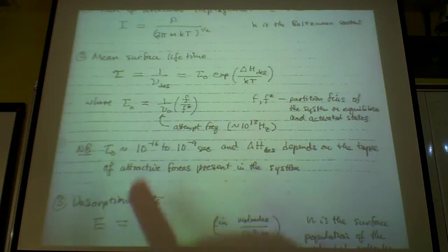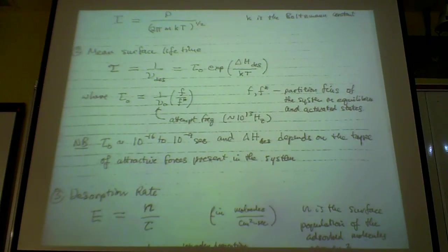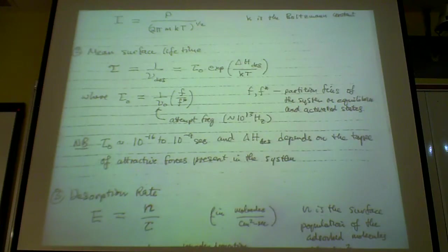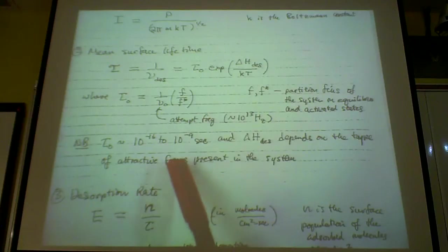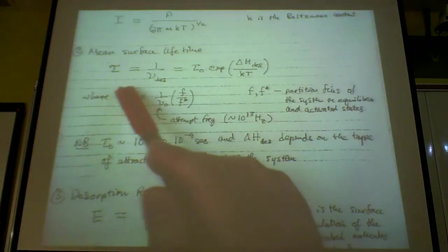And typically this tau knot is of the order of 10 to minus 13, 10 to minus nanosecond to way below picosecond. And picosecond is 10 to minus 12, and then femtosecond, 10 to minus 15, is 0.1 femtosecond to about nanosecond. This is of this basic tau knot.